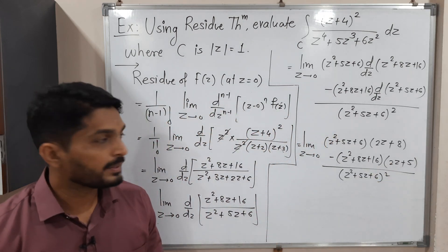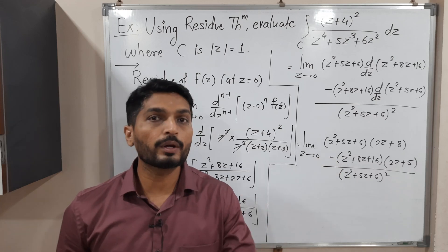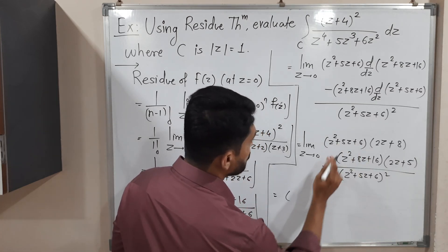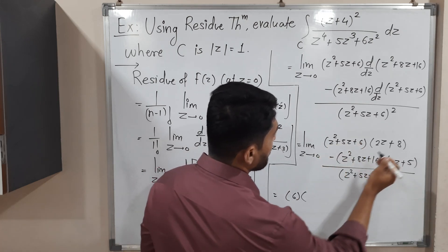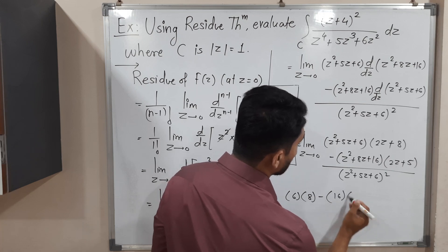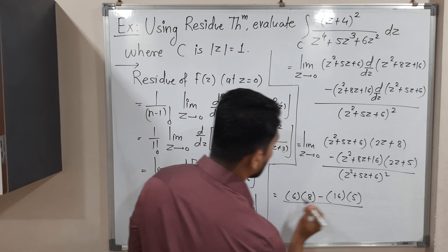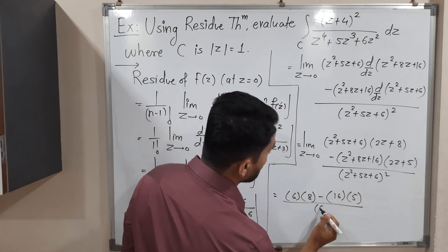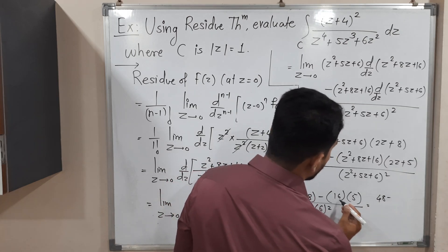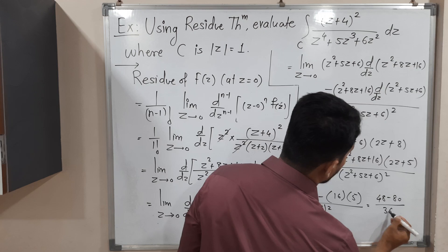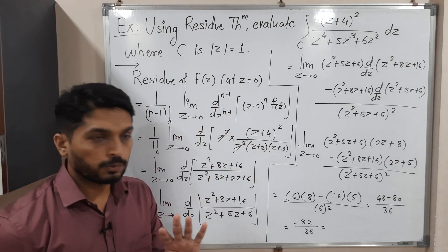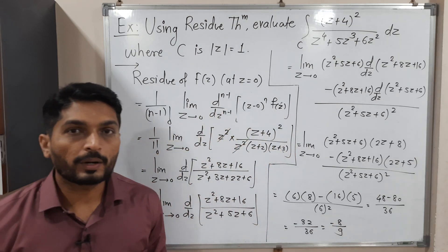Now we apply the limit z → 0, replacing z with 0 everywhere. The numerator becomes: (0 + 0 + 6)(0 + 8) − (0 + 0 + 16)(0 + 5) = 6 × 8 − 16 × 5 = 48 − 80 = −32. The denominator is (6)² = 36. So the residue is −32/36 = −8/9.